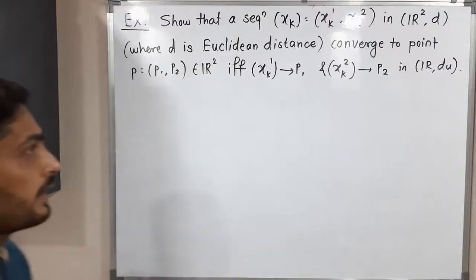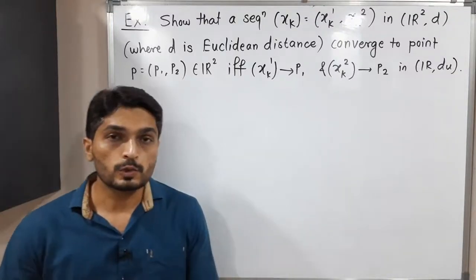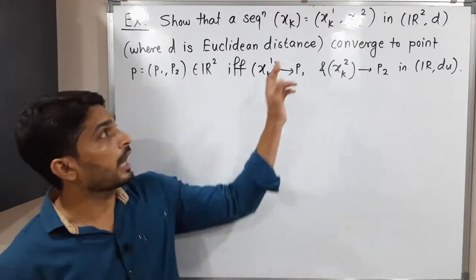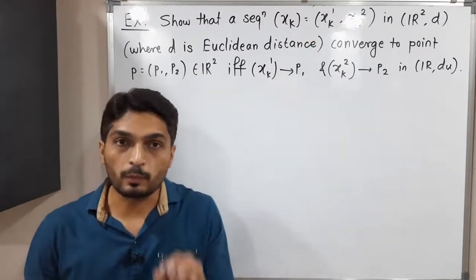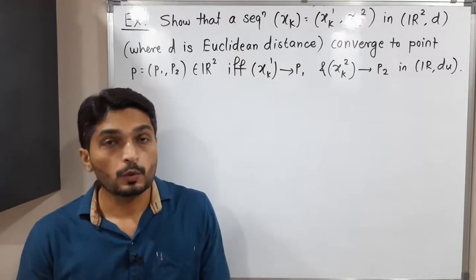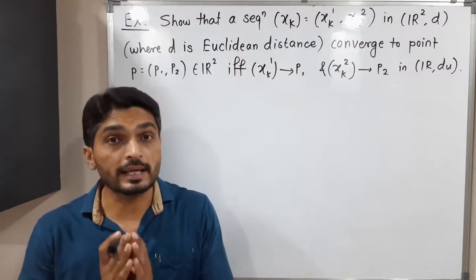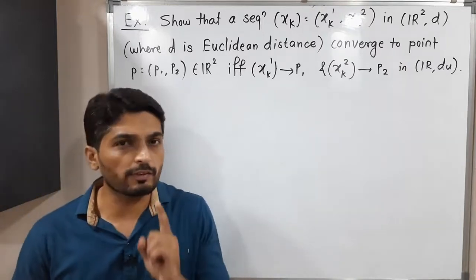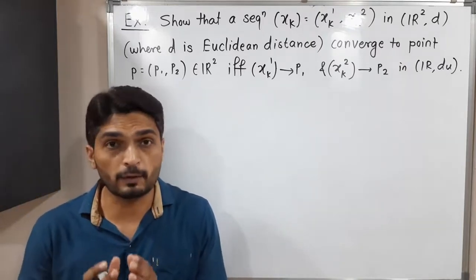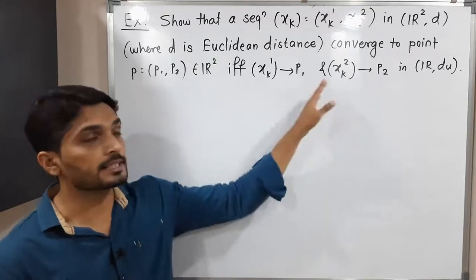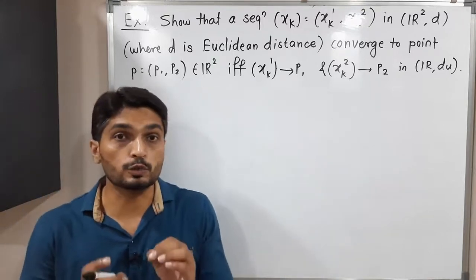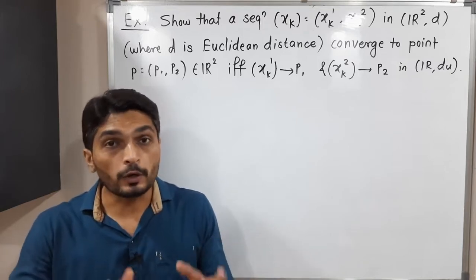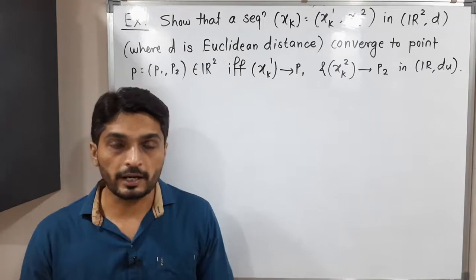Let us discuss this example. We have a sequence xk in R² having two components xk1 and xk2. We have to prove that this sequence xk converges to point p, which is equal to p1 comma p2, if and only if the first component xk1 converges to p1 and the second component xk2 converges to p2.